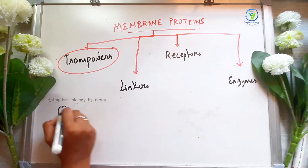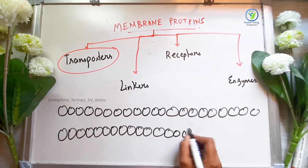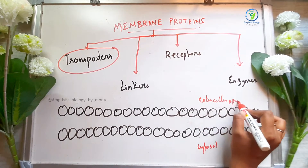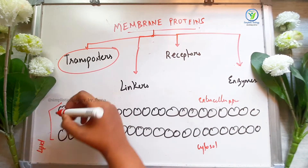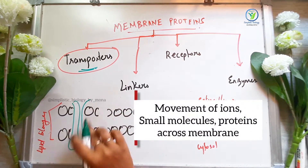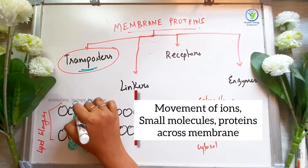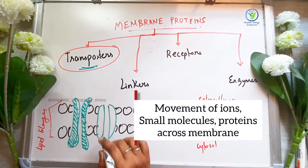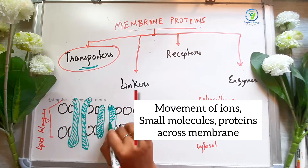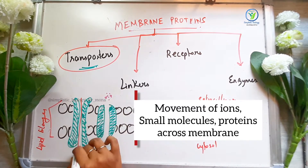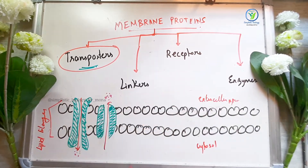First is transporters. The lipid bilayer has two regions: there is a cytosol and an extracellular space — cytosol inside and extracellular space outside. Transporters may be a channel or a carrier. They help in the movement of ions, small molecules, and proteins across the membrane — that is, outside to inside or inside to outside.